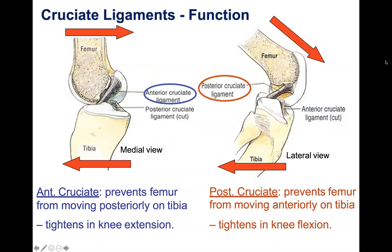We ended off last time talking about the cruciate ligaments — the ACL and the PCL. We talked about why we call them cruciates, because cruciate literally means things that cross over or are cross-shaped. That explains how the anterior and posterior cruciate ligaments look in the knee: they cross over each other.